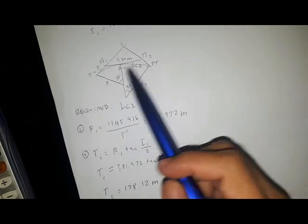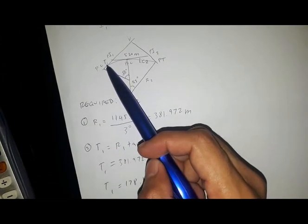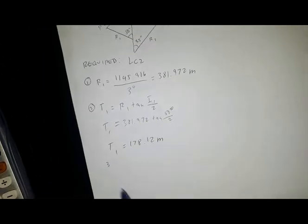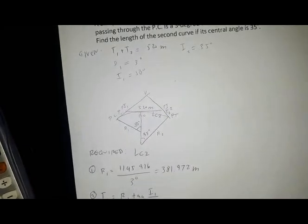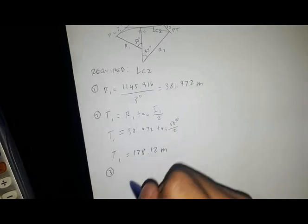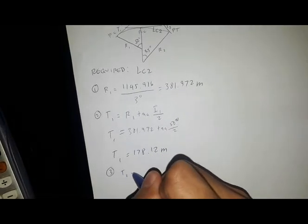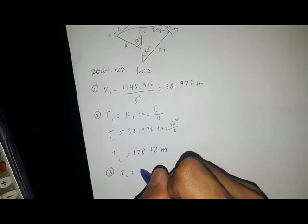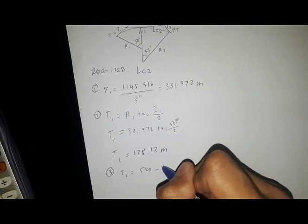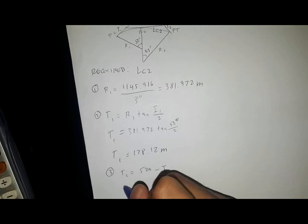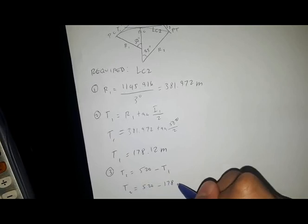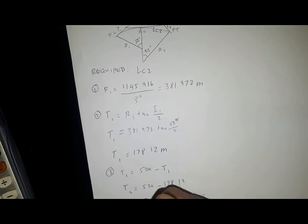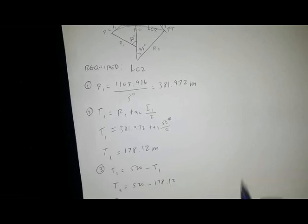Now that we have the value of T1, we solve for T2. T2 equals 520 minus T1, so T2 equals 520 minus 178.12, giving T2 equals 341.88 meters.